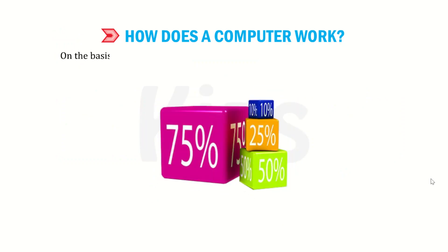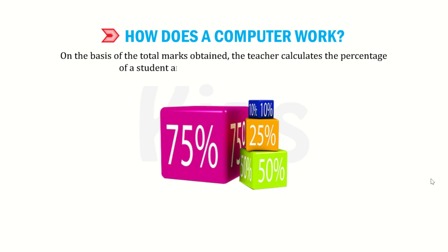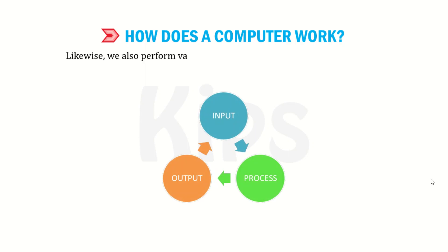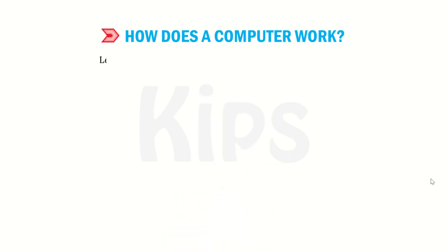On the basis of the total marks obtained, the teacher calculates the percentage of a student and finds their position in the class. Likewise, we also perform various tasks by following the IPO — input-process-output cycle. Let us understand it through some day-to-day life examples.